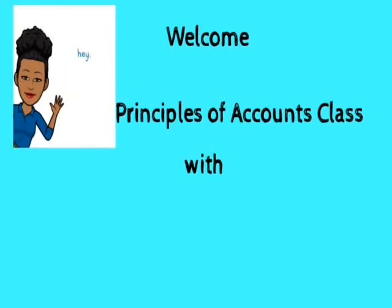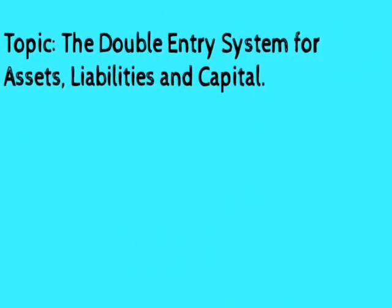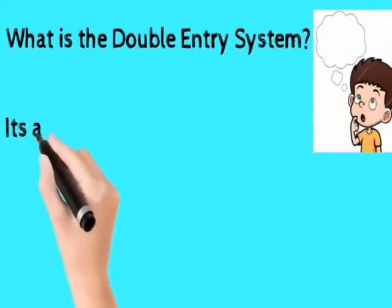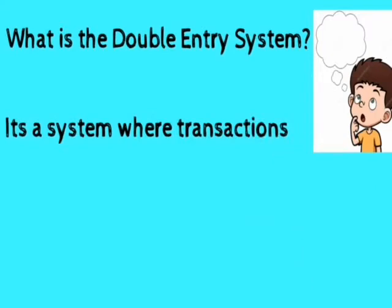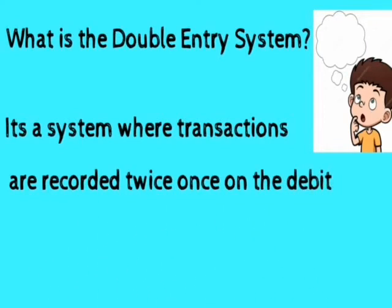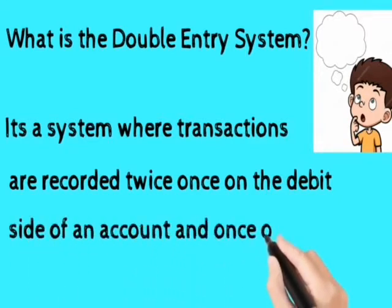Subscribe, like, and share this channel. Now in this lesson we want to look at the double entry system for assets, liabilities, and capital. As the name suggests, the double entry system tells us immediately that this is a system where transactions are recorded twice — once on the debit side of an account and once on the credit side of an account.